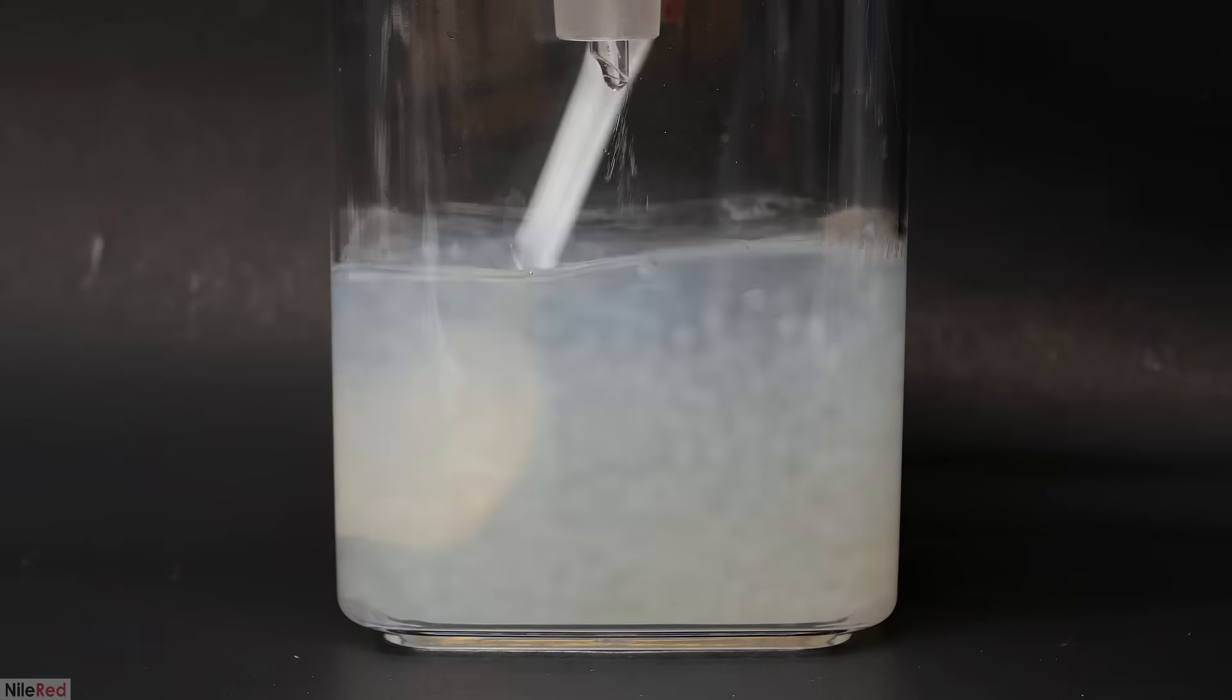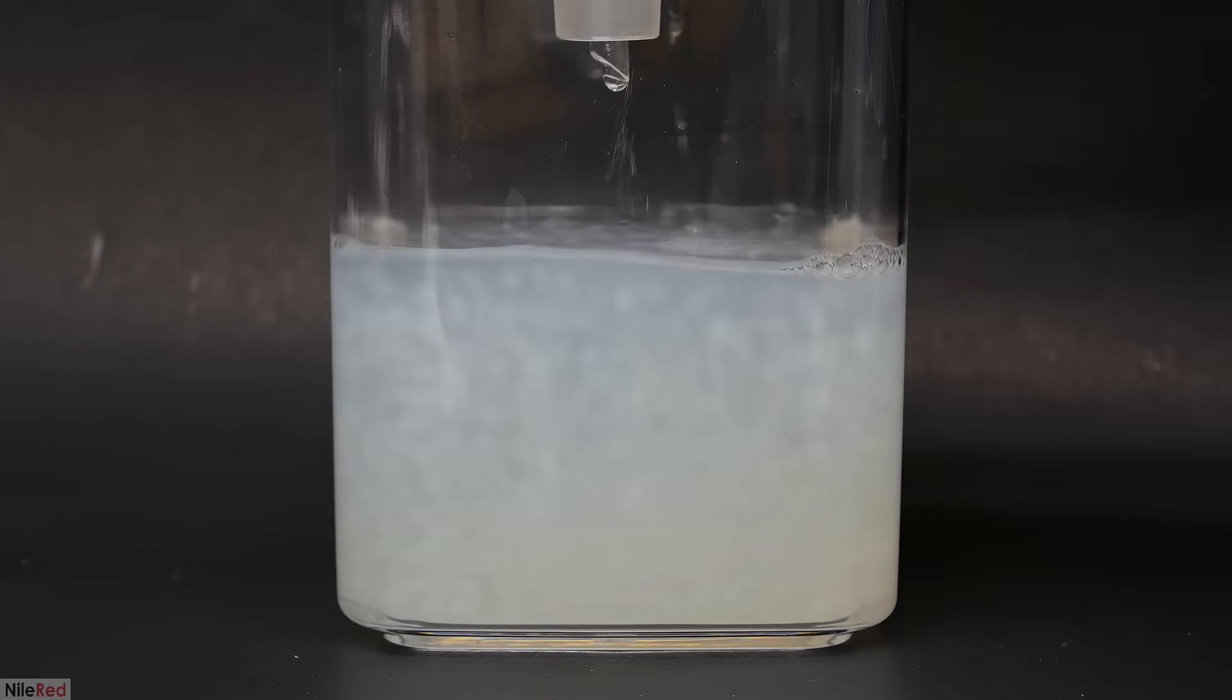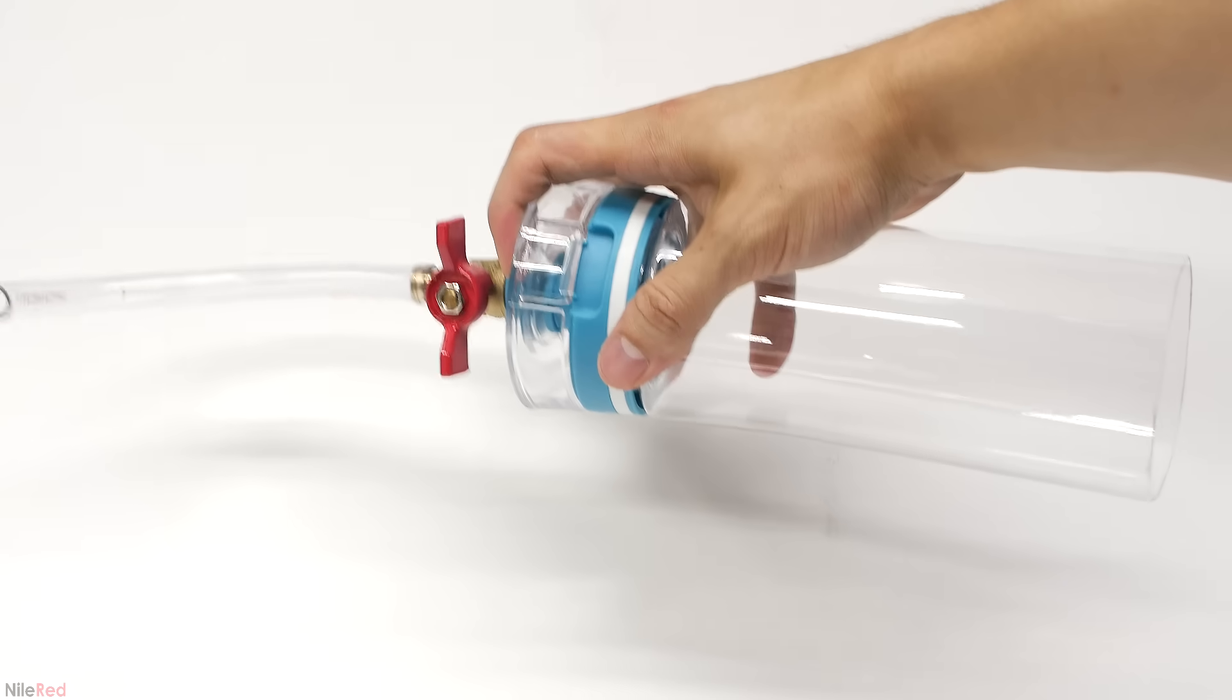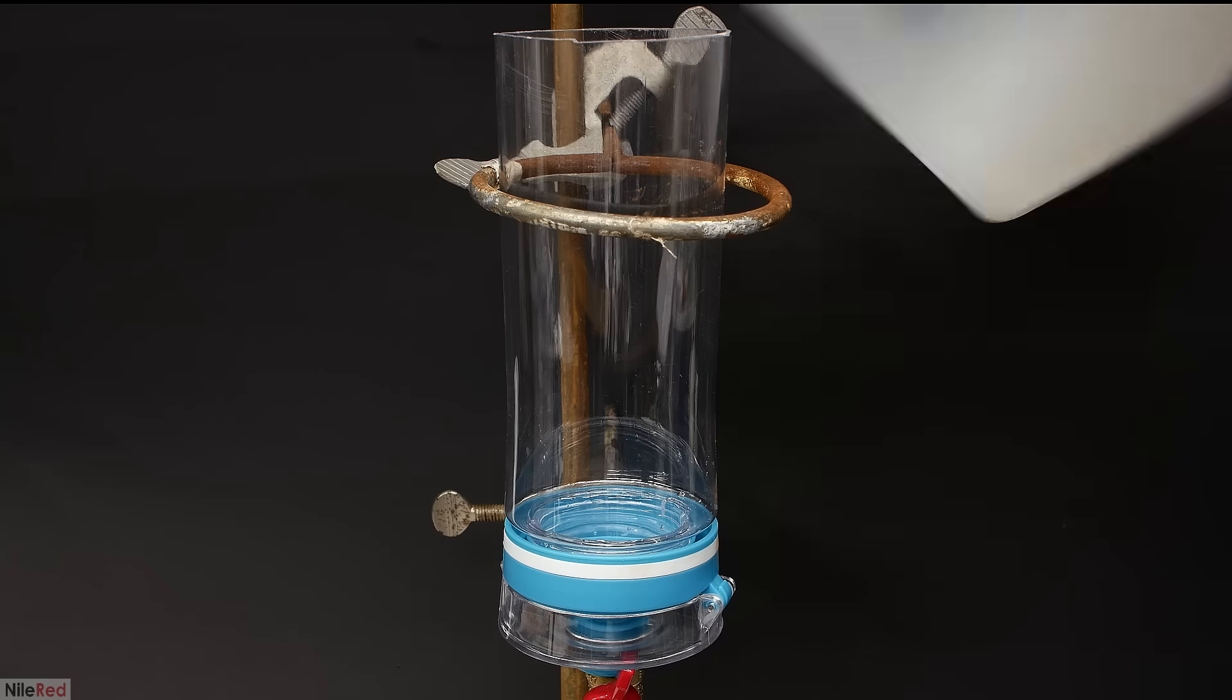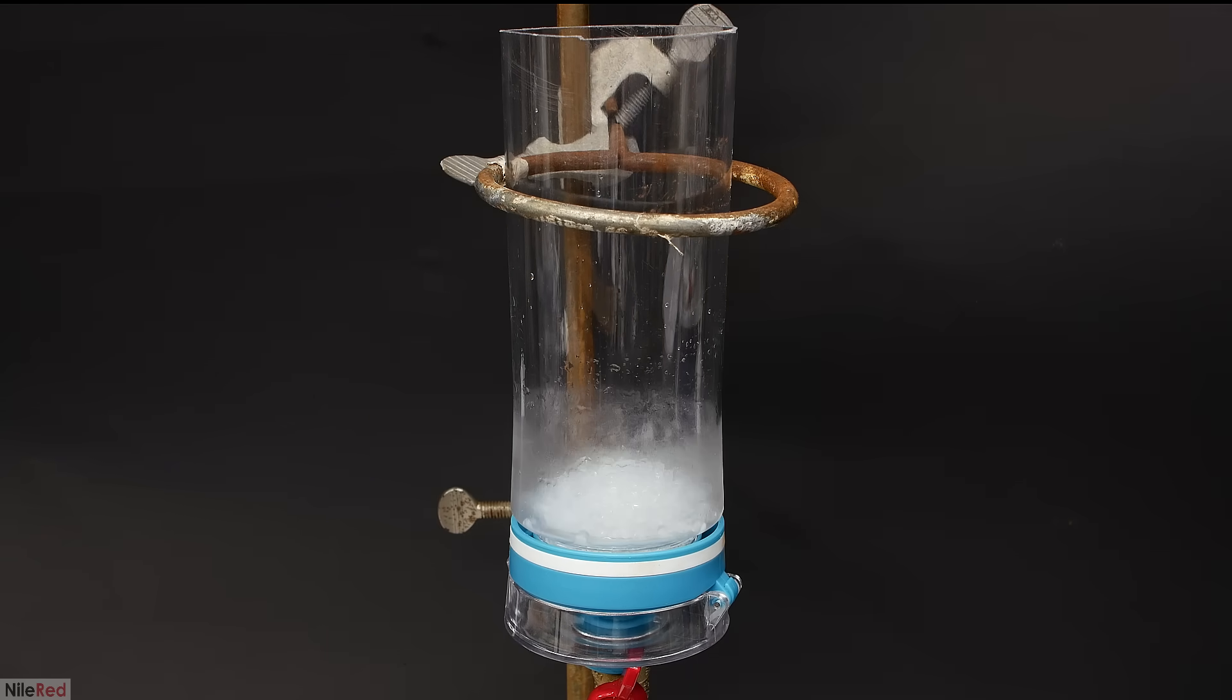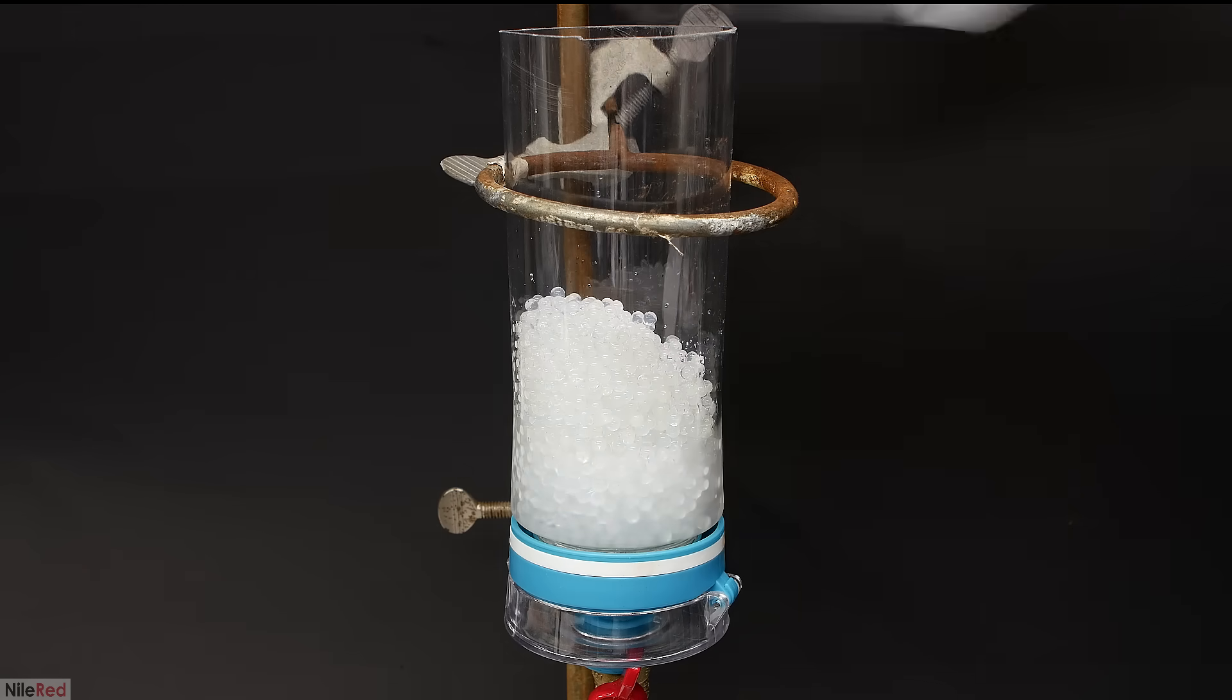When all the sodium alginate was eventually added, I then had to separate off the beads. To do this, I just used this thing which I made out of a water bottle. I kept the valve at the bottom open and I poured everything in. Almost all the water quickly passed through, and I was just left with the beads.